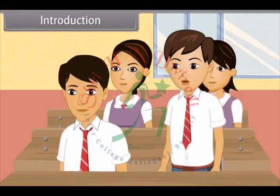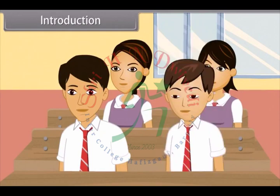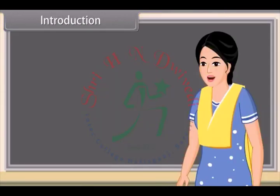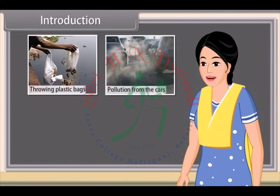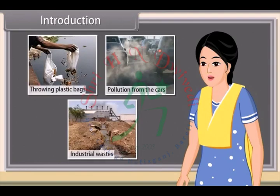How are we making this river polluted? Many of our activities destroy the clean state of rivers, such as throwing plastic bags, pollution from cars, and dumping of industrial wastes. Let us explore them in detail and their effects on our environment.